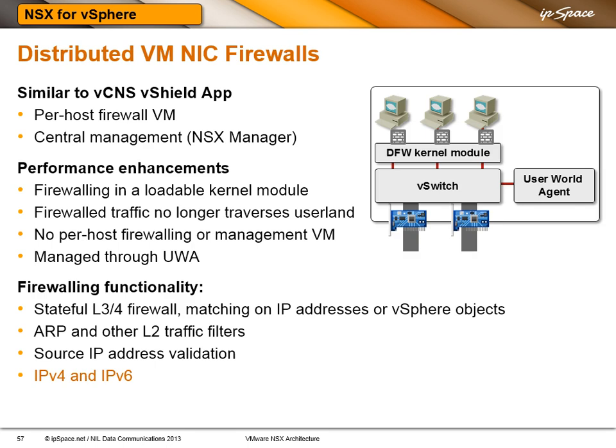In NSX for vSphere, we have distributed VM NIC firewalls. This is like the existing vShield app but with significant performance differences. The firewalls are now implemented in a loadable kernel module, so no traffic whatsoever goes through user land like it did before. The only thing needed from a management perspective is the user world agent that communicates with the NSX controller. Firewalling functionality covers layer 3 and layer 4; you can match on IP addresses or vSphere objects, and also on ARP and other layer 2 traffic filters. It's a stateful firewall, not just reflexive access control lists.